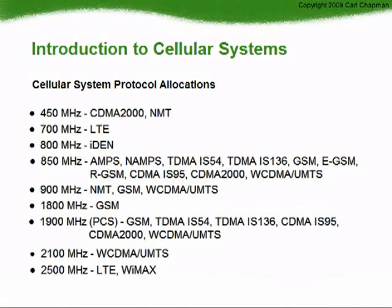Cellular systems around the world use a variety of technologies, protocols, and frequencies. Many of the technologies discussed can be used in multiple frequency bands — for example, GSM can be used at 850, 900, 1800, and 1900 MHz. When talking about a particular cellular operator system, it is important to specify both the protocol and frequency band to avoid confusion — for example, GSM-900 or TDMA-1900.